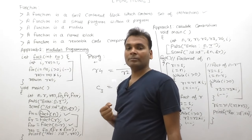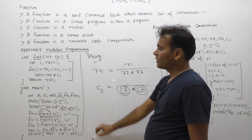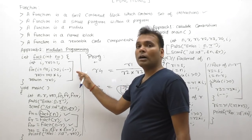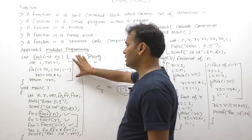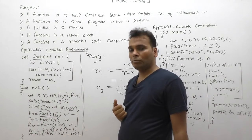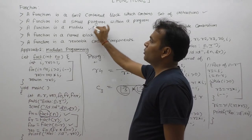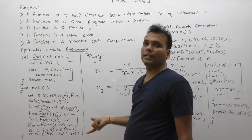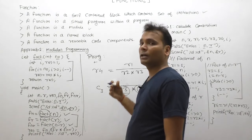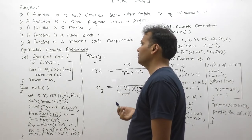Another definition: a function is a small program within a program. The complete thing is considered the main program, but a function by itself is not a complete program — it is a part of the program. So a function is considered a small program within another program. Functions are also called modules — small tasks responsible for performing specific operations. A function is a named block, where the function name is the name of that block. A function is reusable code or a reusable component.